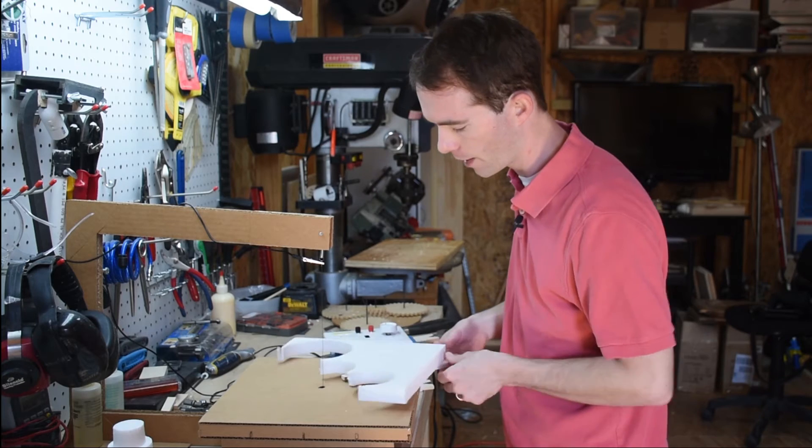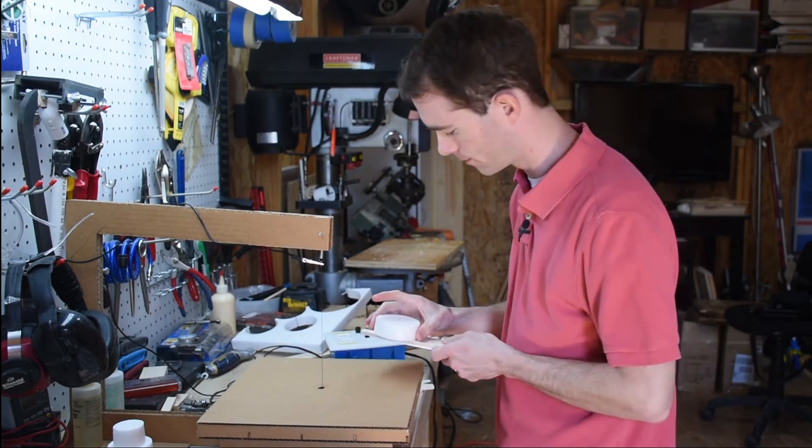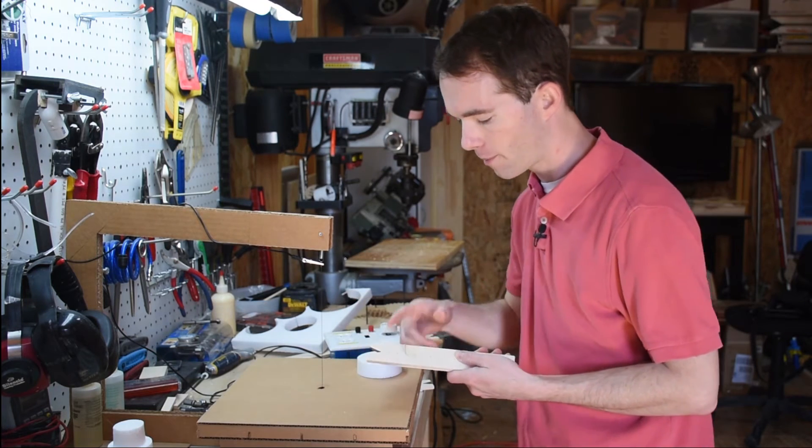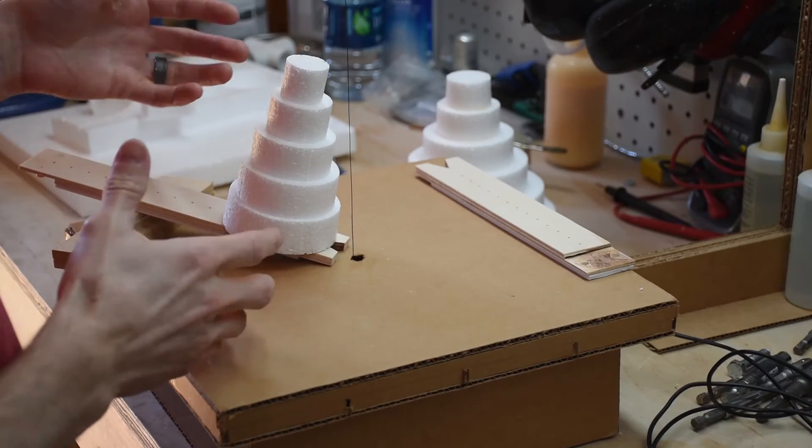And once I've gone all the way around I simply pull back, power off, remove that and there's my perfect circle. I'm going to go ahead now and make a 2 and a 1. I'm going to stack them and then we'll cut a cone.